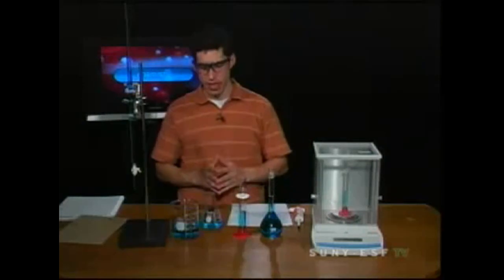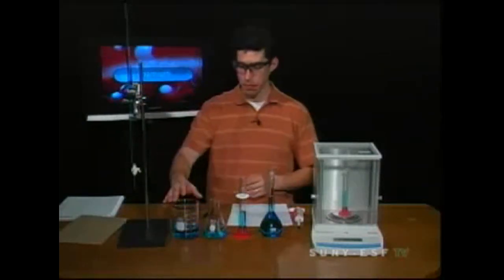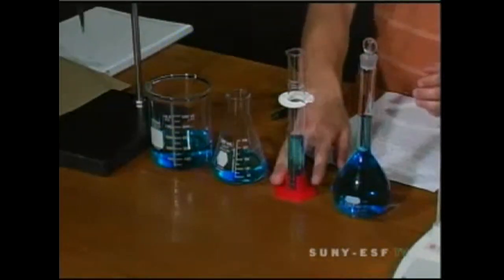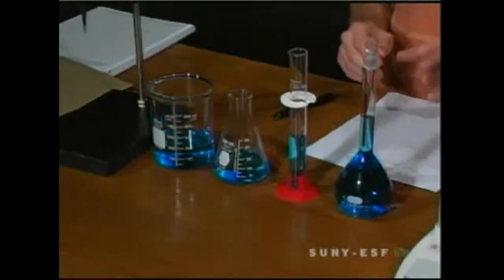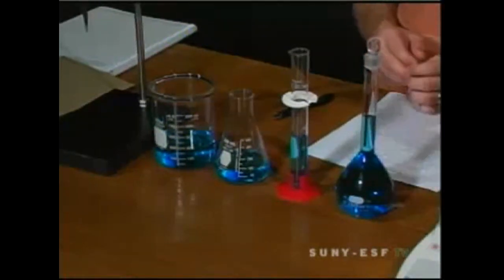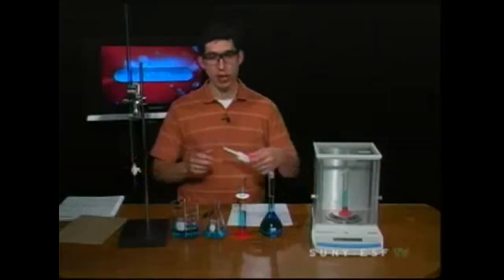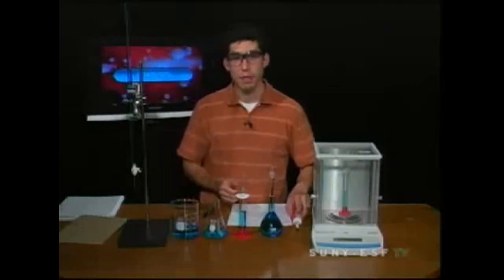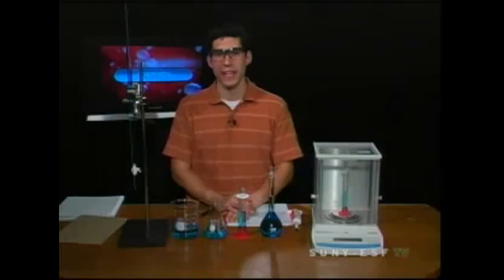So let's just summarize some of the pieces of lab equipment that we have for measuring volume. We have the beaker and the Erlenmeyer flask, both of them approximate. We have the graduated cylinder, a little more accurate. The volumetric flask, incredibly accurate to the marking. The burette, the micropipette, and then lastly, the balance. So I hope you've learned a little about how to measure volume in the lab. We'll see you next time. Thank you.